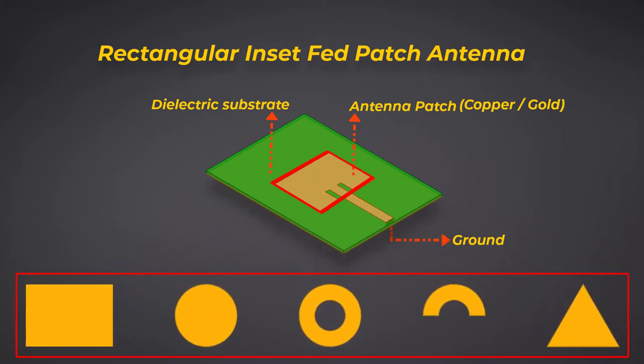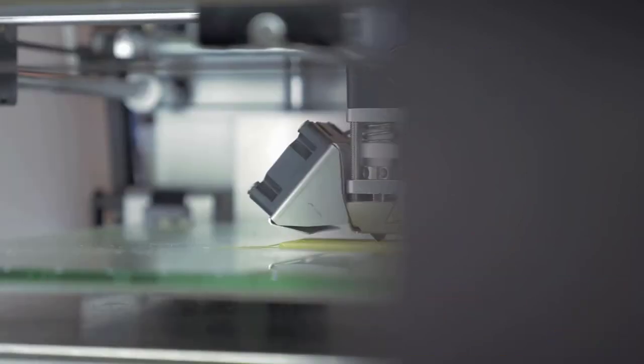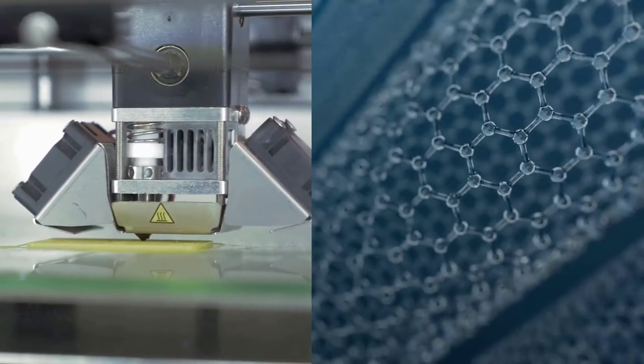The radiating patch and the feed lines are usually etched on the dielectric substrate but there's also research on 3D printed antennas and the use of metamaterials.